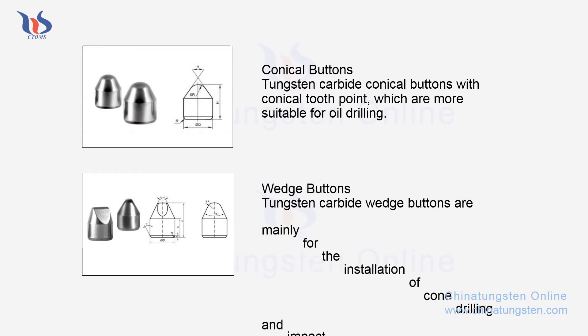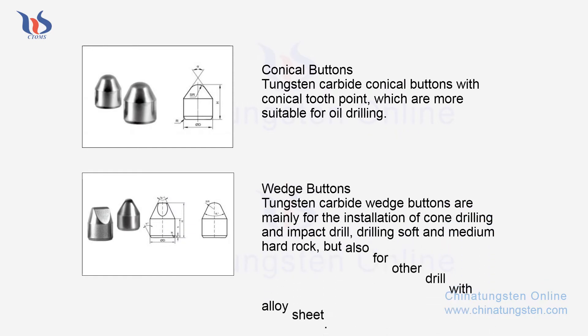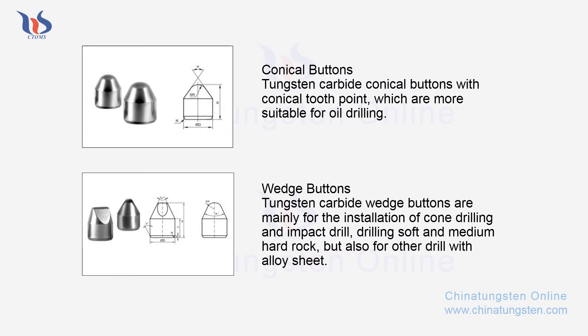Wedge buttons. Tungsten carbide wedge buttons are mainly for the installation of cone drilling and impact drill, drilling soft and medium hard rock, but also for other drills with alloy sheet.